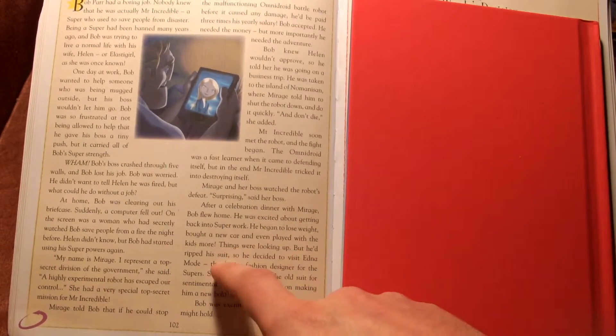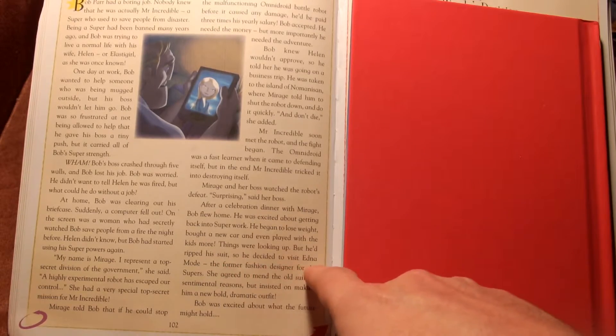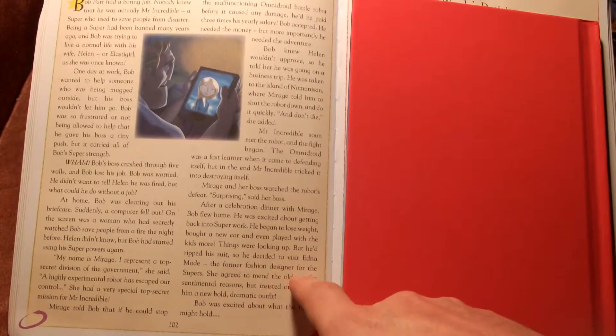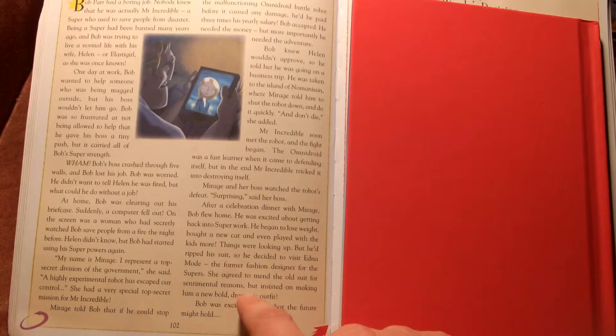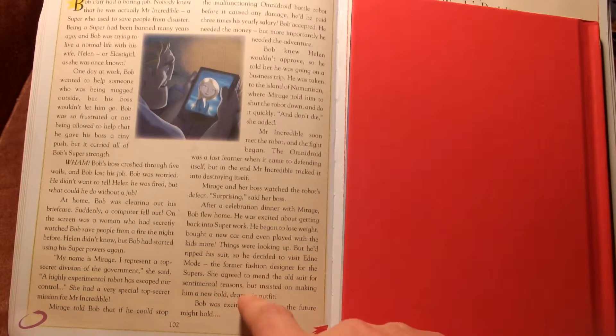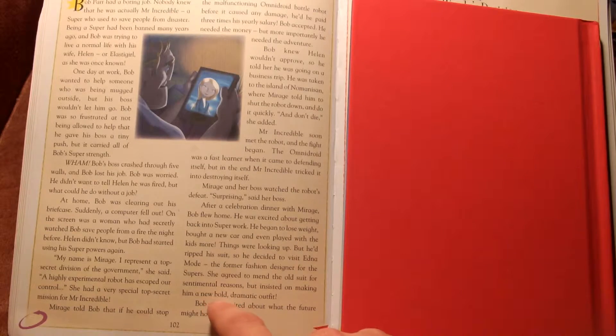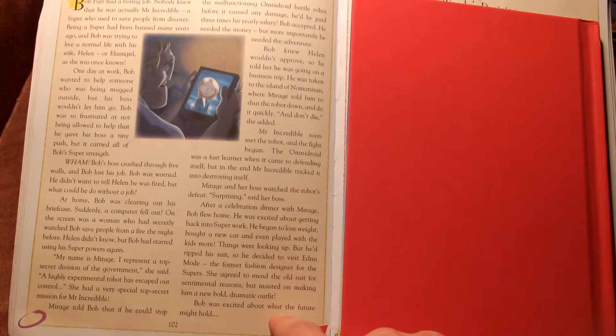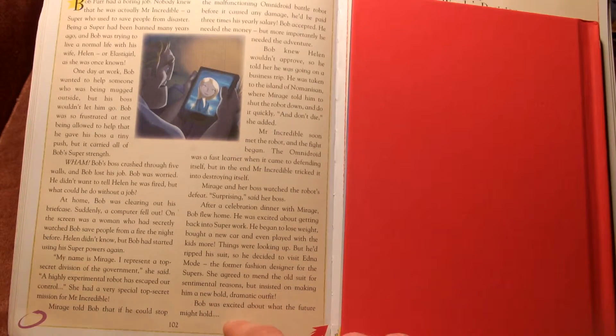Things were looking up but he'd ripped his suit so he decided to visit Edna Mode, the former fashion designer for the Supers. She agreed to mend the old suit for sentimental reasons but insisted on making him a new, bold, dramatic outfit. Bob was excited about what the future might hold.